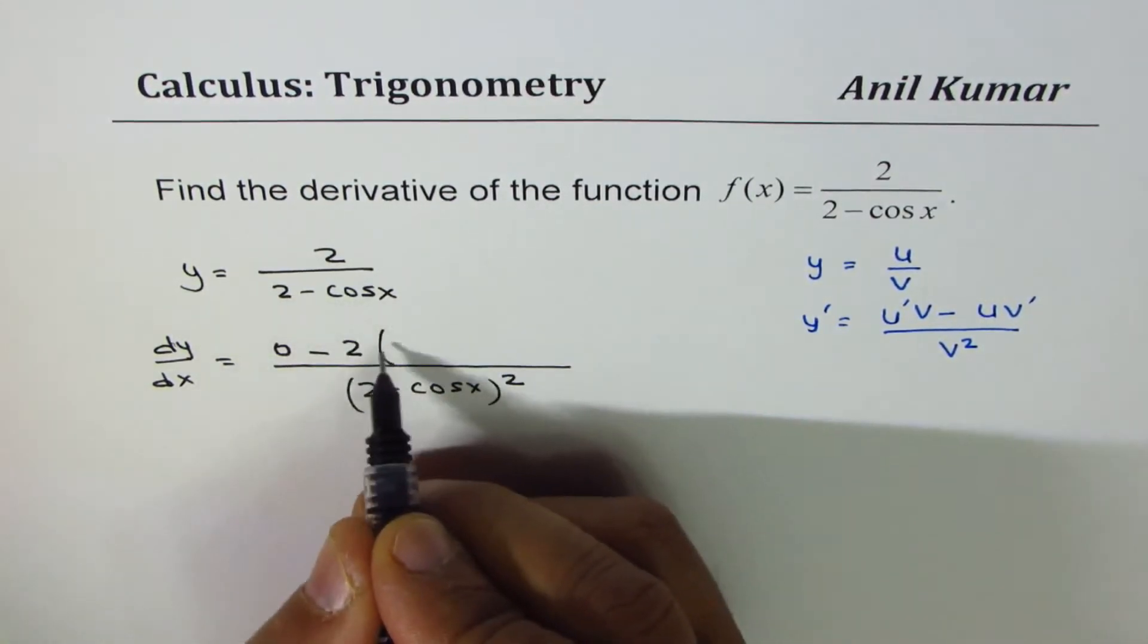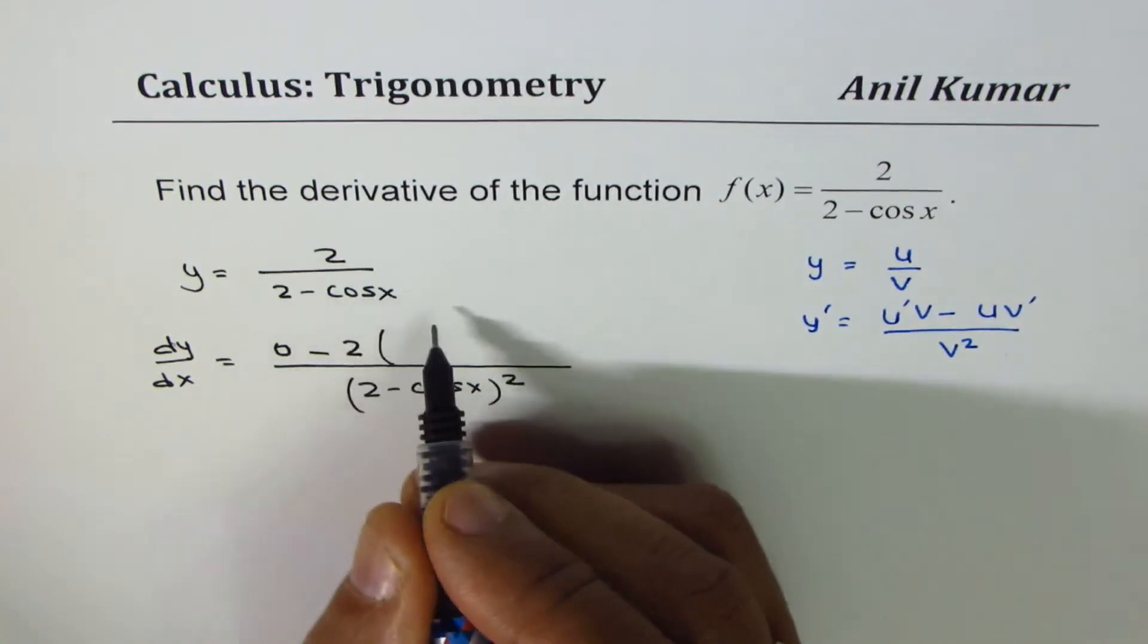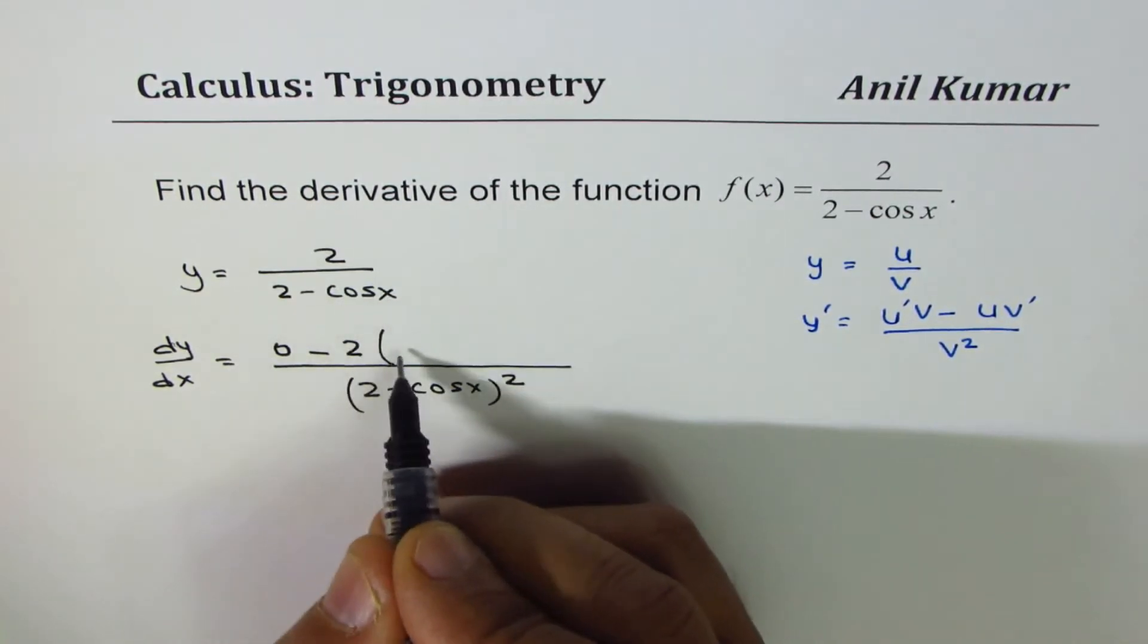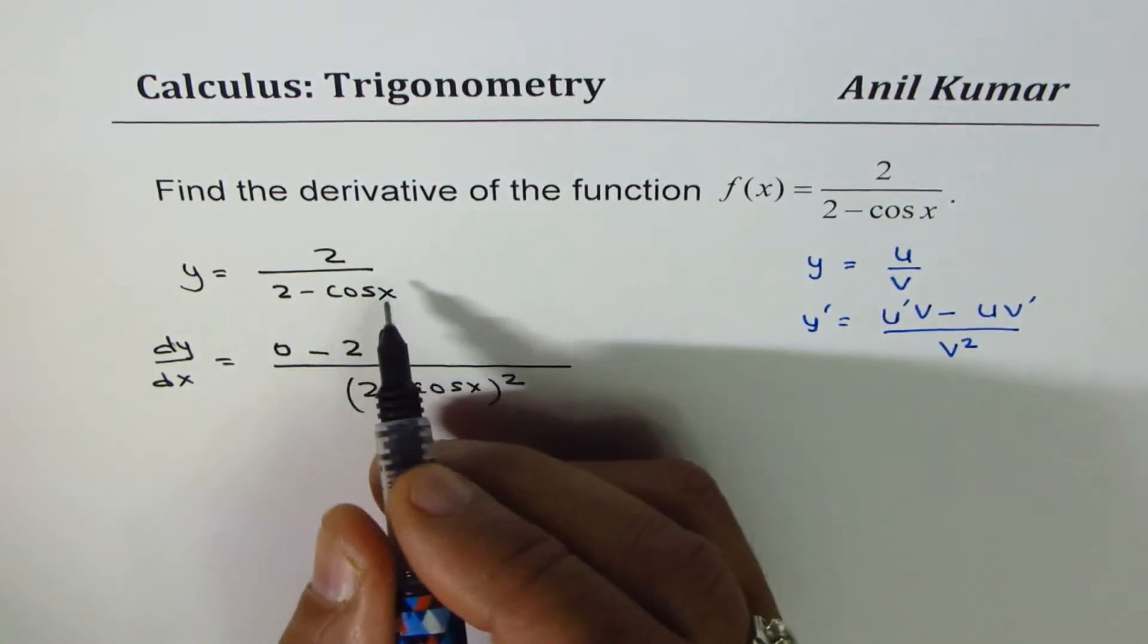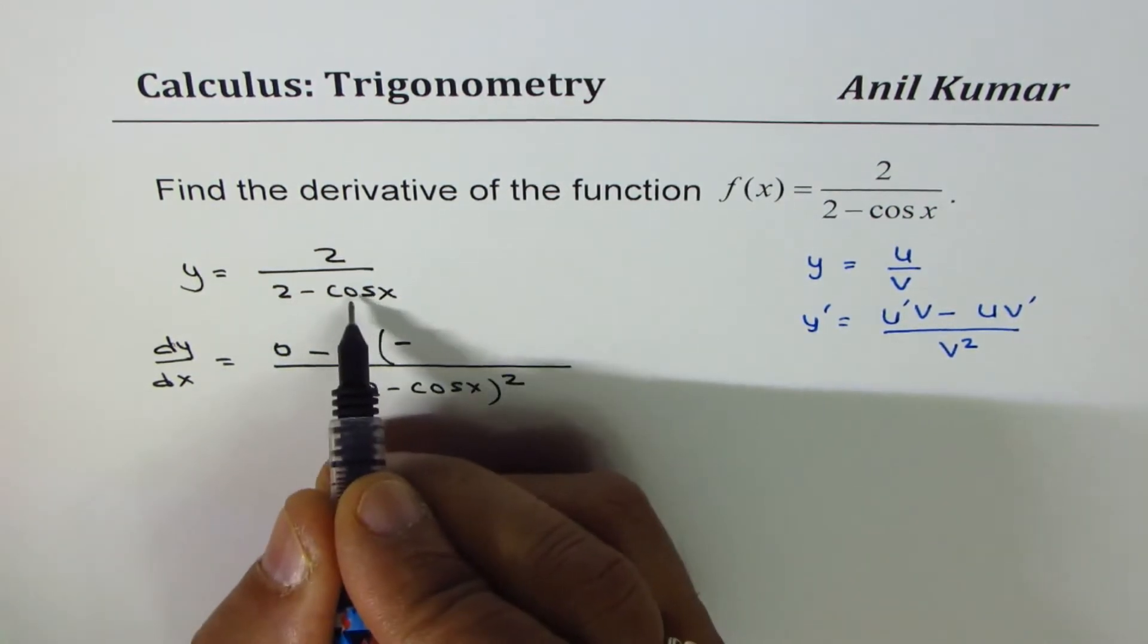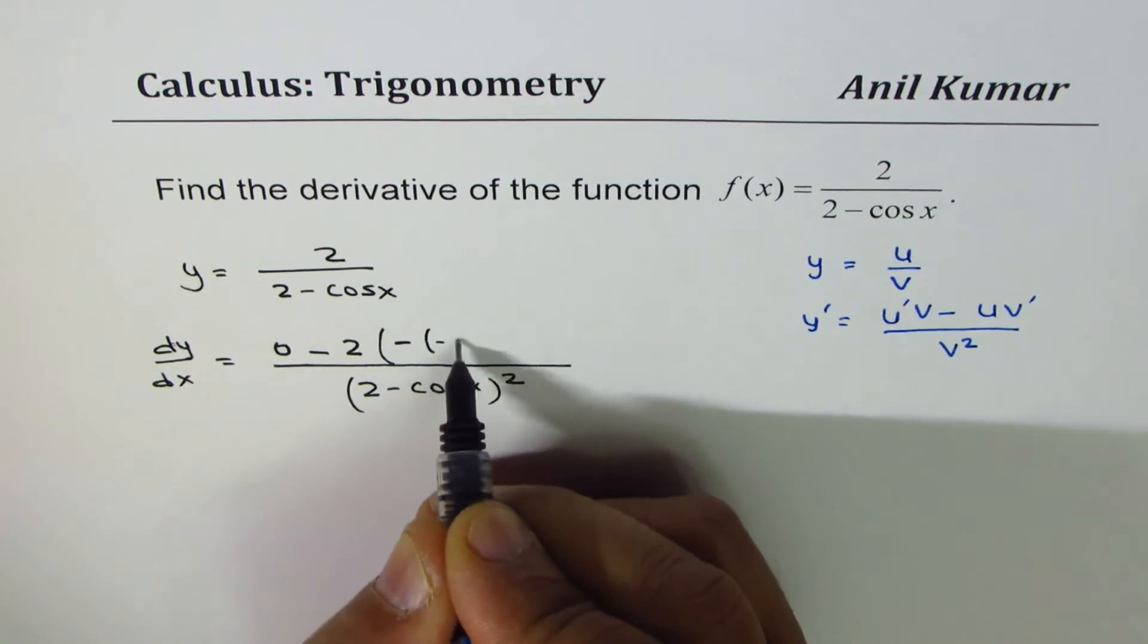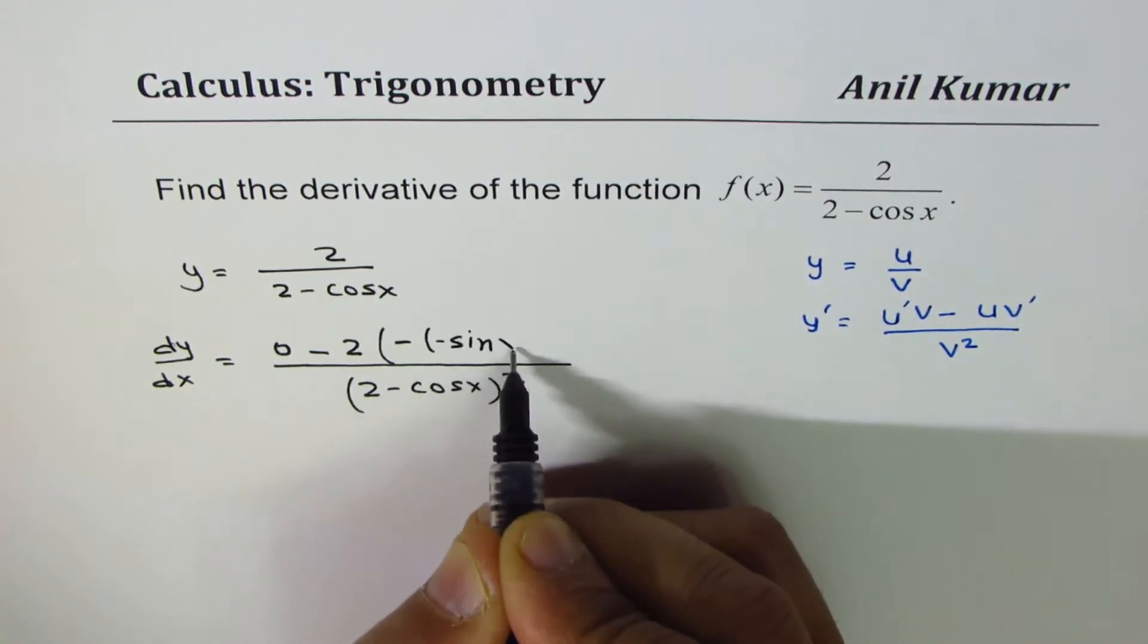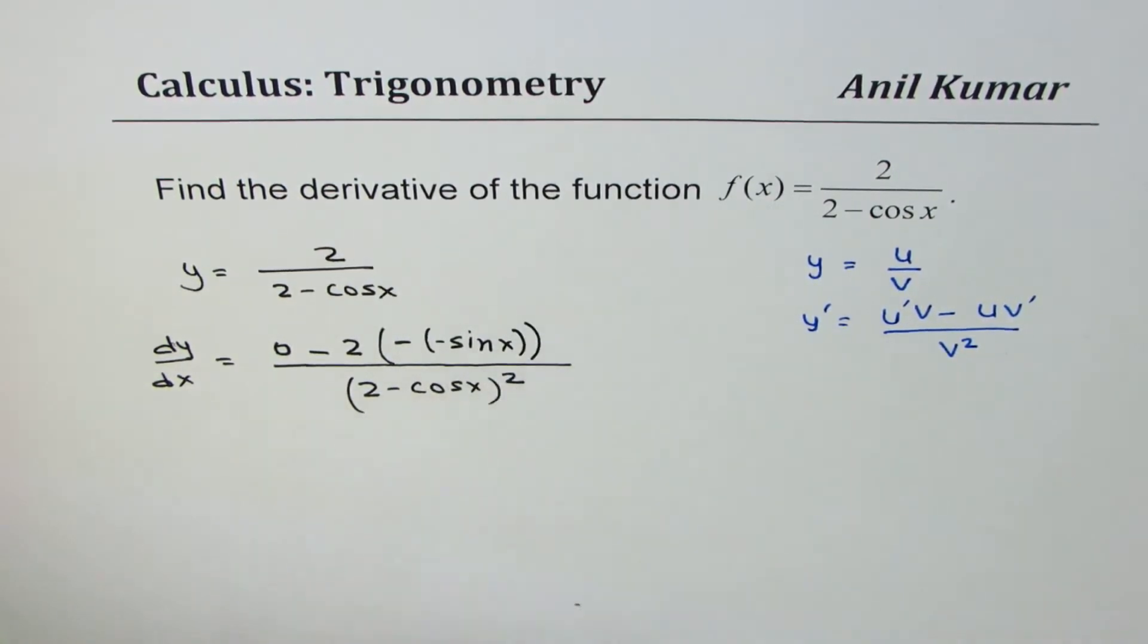which is minus cos x. So it is minus of minus. Let me rewrite this as, this minus stays here, derivative of cos x is minus sin x.